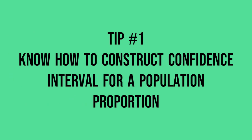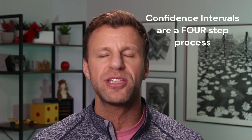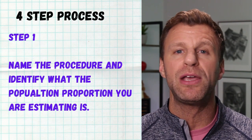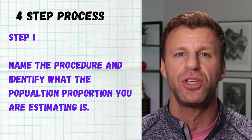The first thing you have to know is how to actually construct one of these. On the AP exam, you're probably going to have a question asking you to construct a confidence interval for a population proportion, whether it be an FRQ or multiple choice. I like to look at the entire process as a four-step process. Step one is simply naming what you're trying to find and identifying the proper procedure — a one sample Z interval for a population proportion.